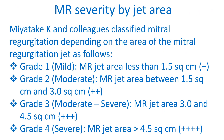Miate K and colleagues classified mitral regurgitation depending on the area of the mitral regurgitation jet as follows. Grade 1, Mild: MR jet area less than 1.5 square centimeters (+). Grade 2, Moderate: MR jet area between 1.5 and 3 square centimeters (++). Grade 3, Moderate to Severe: MR jet area 3 to 4.5 square centimeters (++). Grade 4, Severe: MR jet area more than 4.5 square centimeters (+++).